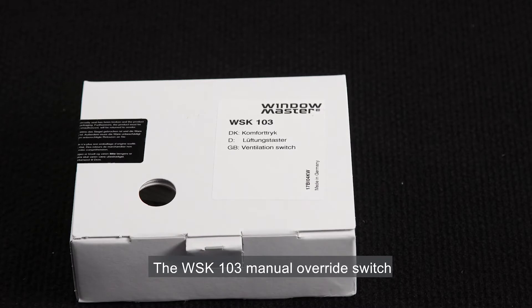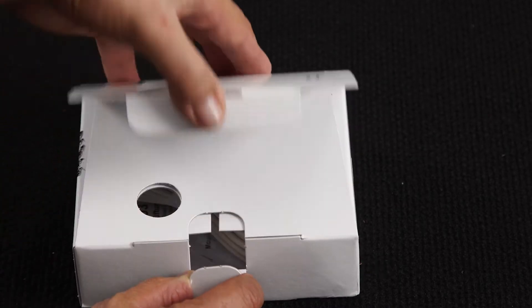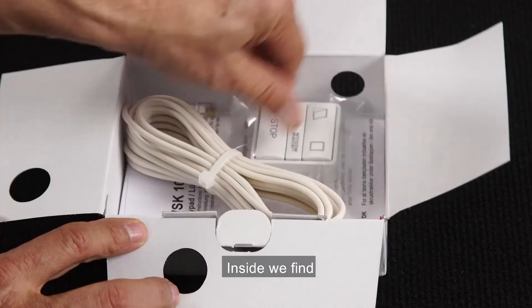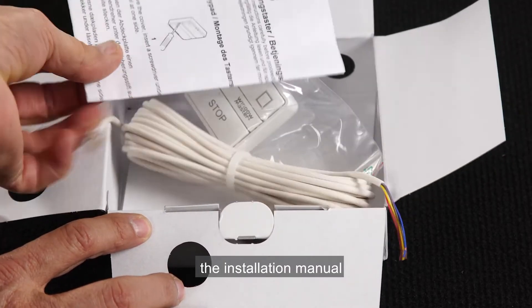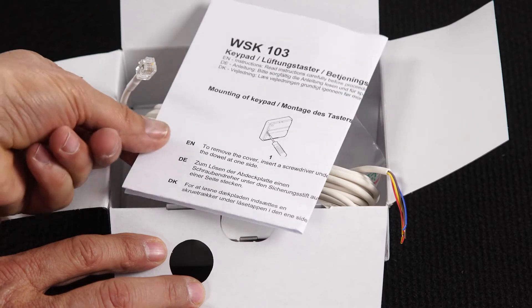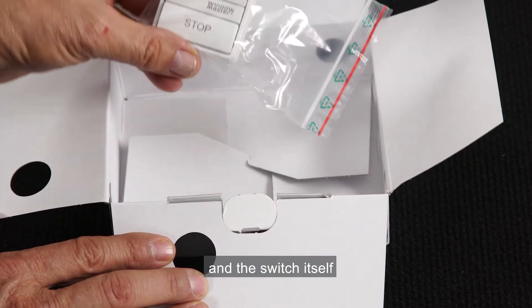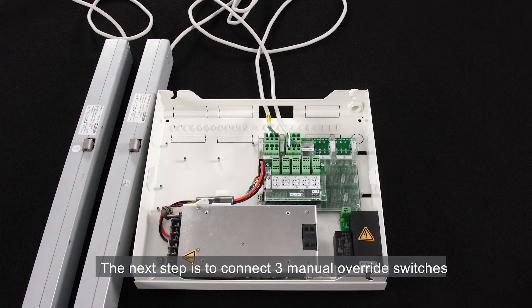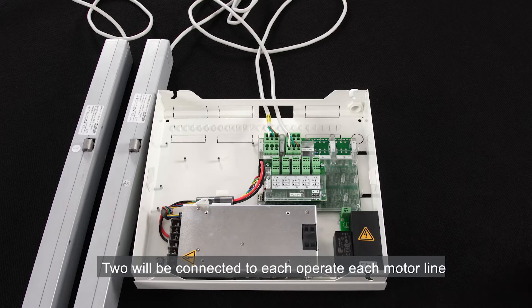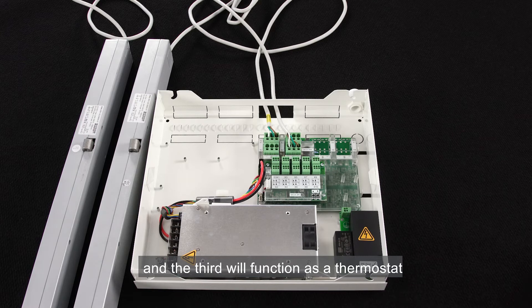The WSK 103 manual override switch. Inside we find the installation manual, the cable, and the switch itself. The next step is to connect three manual override switches. Two will be connected to operate each motor line, and the third will function as a thermostat that controls the two motor lines in automatic mode.